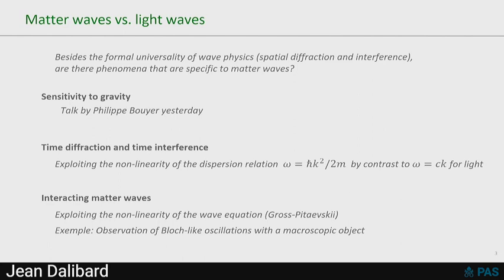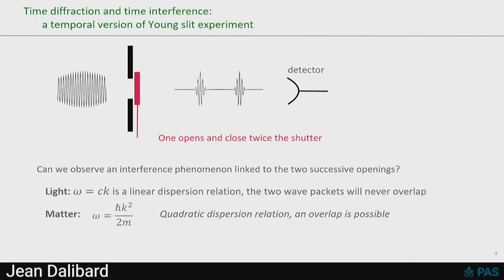Let me start with a few words about time diffraction and time interference. So the experiment that I have in mind here is the following. You have a light wave, or matter wave, which arrives on a screen, here with a single hole. And what you want to do is a temporal version of Young-slit experiment. So you have a shutter in front of the hole, and you are going to open and close twice the shutter. So you have two wave packets, which are produced after this double opening of the shutter. And you ask yourself, if you put a detector downstream, are you going to see an interference phenomenon linked to the two successive openings?